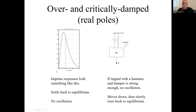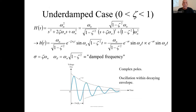No oscillation. If you strike this mass with a hammer and it's got a strong enough damper, it will move to some maximum extent and then slowly come back and settle back to its original position without oscillation — that's overdamped and critically damped. In the underdamped case, there will be oscillation inside an exponential envelope.